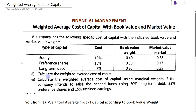What you have to calculate? First, calculate the weighted average cost of capital. Second, calculate the weighted average cost of capital using marginal weight. Marginal weight means additional weight — calculate if the company intends to raise the needed funds using 50% long-term debt, 35% preferences, and 15% retained earnings. Now, based on this information, we will calculate the weighted average cost of capital according to book value.